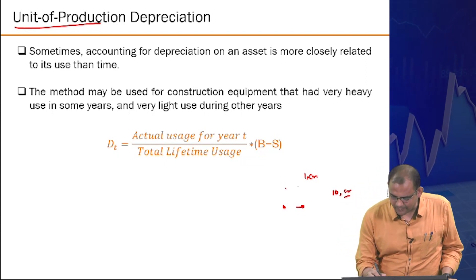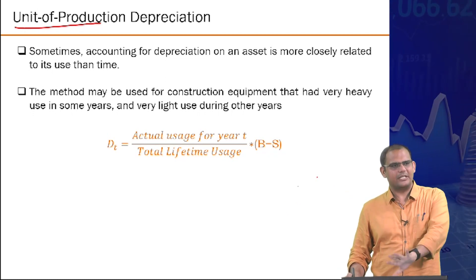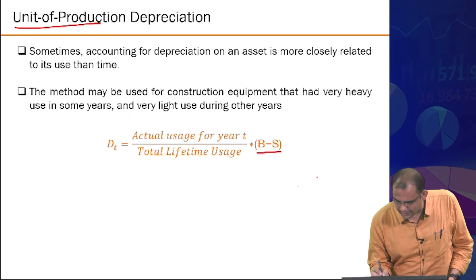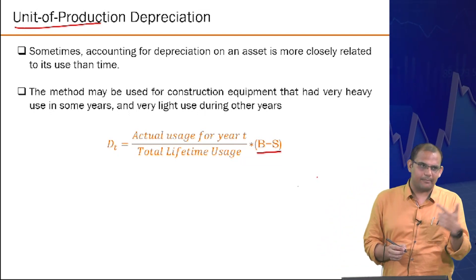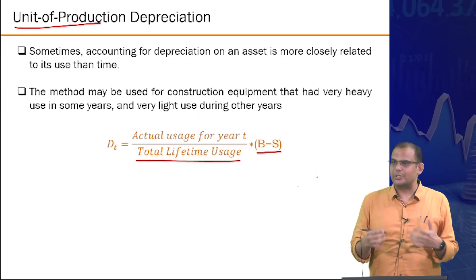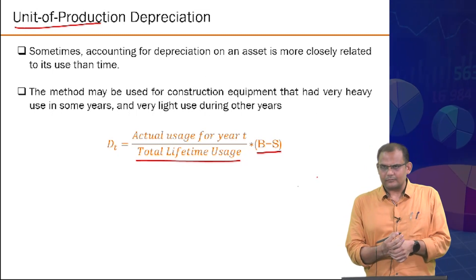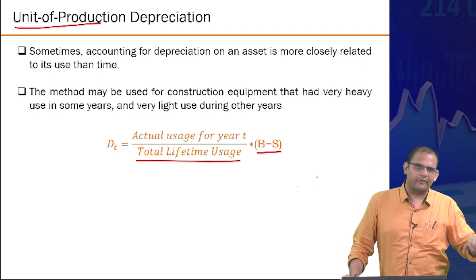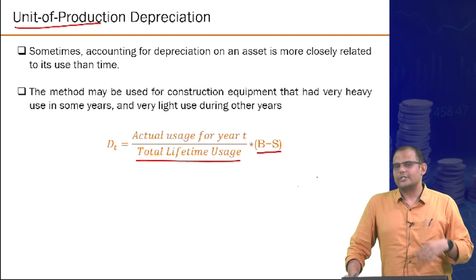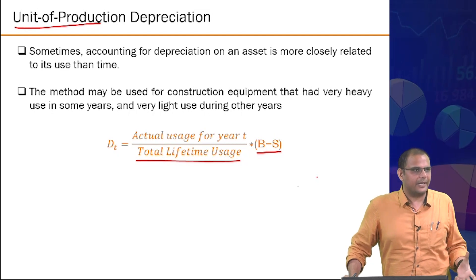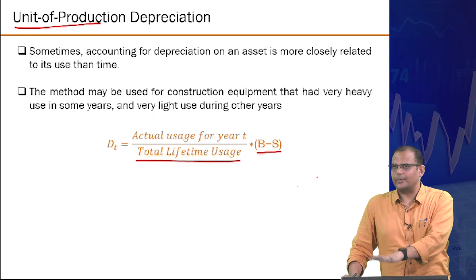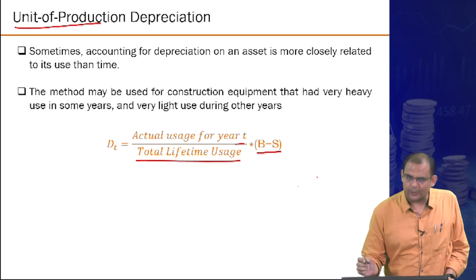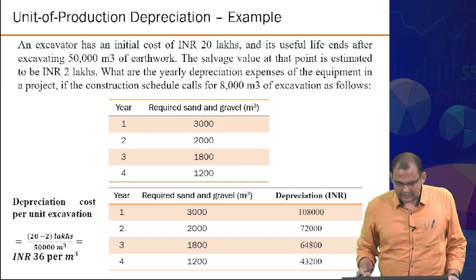Unit of production formula: depreciation for year t = (actual usage in year t / total lifetime usage) × (B minus S). Example: an excavator with initial cost 20 lakhs, useful life 50,000 cubic meters of earthwork, salvage value 2 lakhs. A project requires 8,000 cubic meters over 4 years.